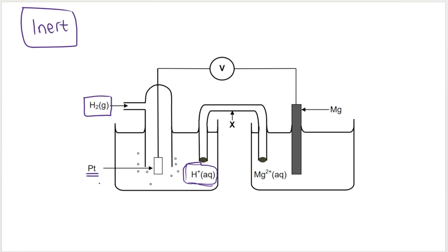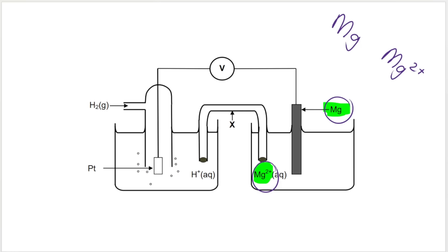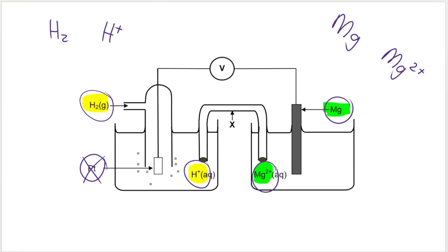We generally use platinum as the inert electrode, though carbon or graphite can also be used. Everything else stays the same — you look for your two substances on the table. In this case, magnesium is one: look for the half reaction with magnesium on one side and Mg2+ on the other. The other half reaction will include hydrogen gas on one side and H+ ions on the other. Platinum will not appear anywhere in the table. So we're looking for the half reactions containing magnesium and hydrogen.